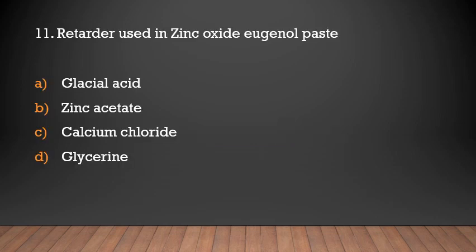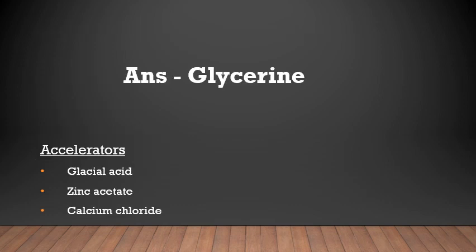Retarder used in zinc oxide eugenol paste — options: glacial acid, zinc acetate, calcium chloride, glycerine. Answer: Glycerine acts as a retarder in zinc oxide eugenol paste. Important accelerators include glacial acid, zinc acetate, and calcium chloride.